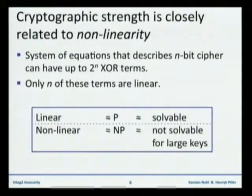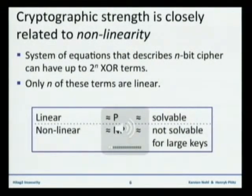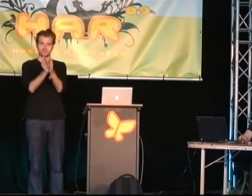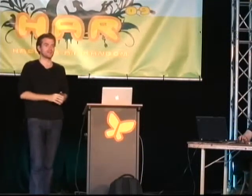For the computer science folks in the room, we're really talking about a P vs. NP-complete problem here. If you are NP-complete, you're definitely too expensive to break. When you're P, you're definitely too cheap to protect. So this golden middle is what cipher designers need to strike.